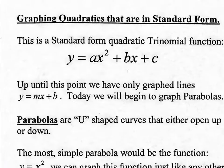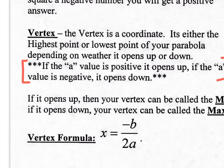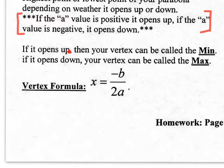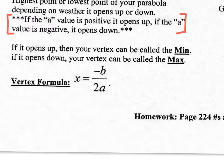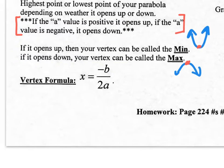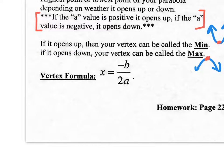If it opens up, you're going to have a minimum value. If it opens down, you're going to have a maximum value. Now here's something we also need to memorize — the vertex formula: X equals negative B over 2A. You have to memorize this, similar to how we memorized the slope formula when graphing lines.